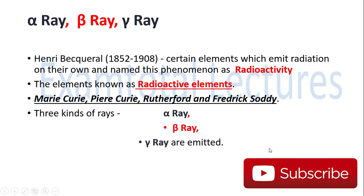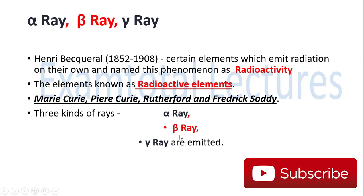Alpha rays, beta rays, and gamma rays were further discovered. Henry Becquerel found that some elements emit radiation on their own — this phenomenon was named radioactivity. Elements that emit radiation in this way are called radioactive elements. Full credit for developing the field of radioactivity goes to Marie Curie, Pierre Curie, Rutherford, and Frederick Soddy, who made many discoveries in this area.